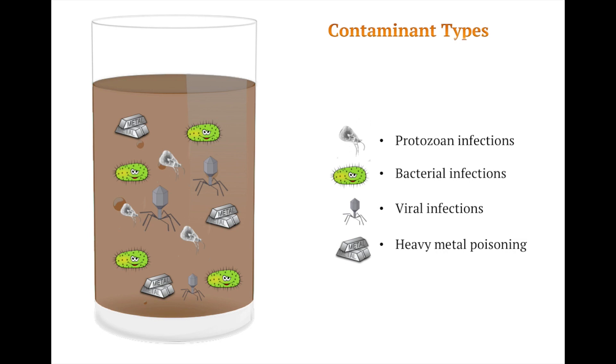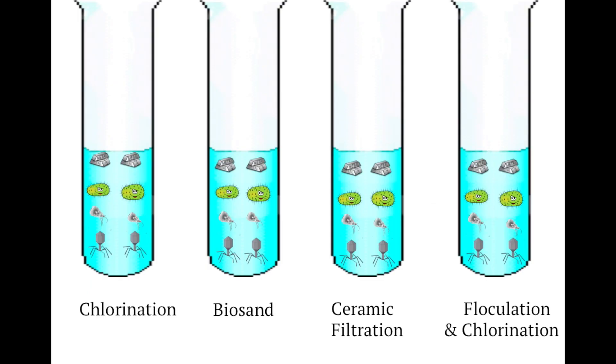Household water treatment aims to remove these contaminants. This can be accomplished by various techniques. Four of the most common techniques are chlorination, biosand, ceramic filtration and a combination of flocculation and chlorination. The water filters have varying degrees of effectiveness and are chosen according to what contaminants the raw water consists of.